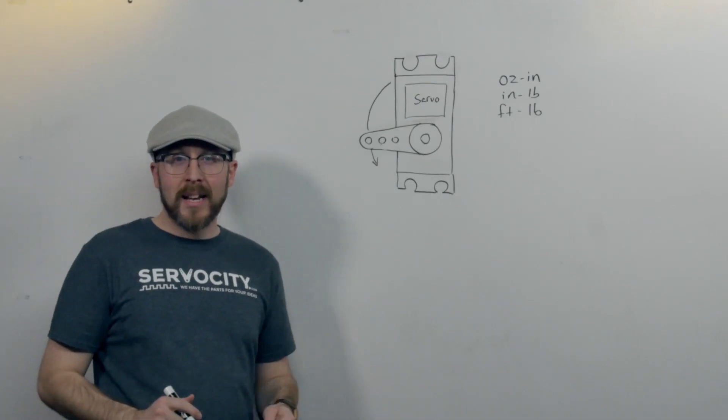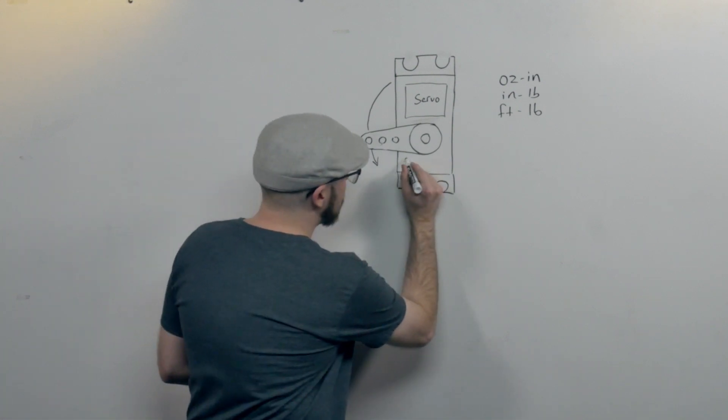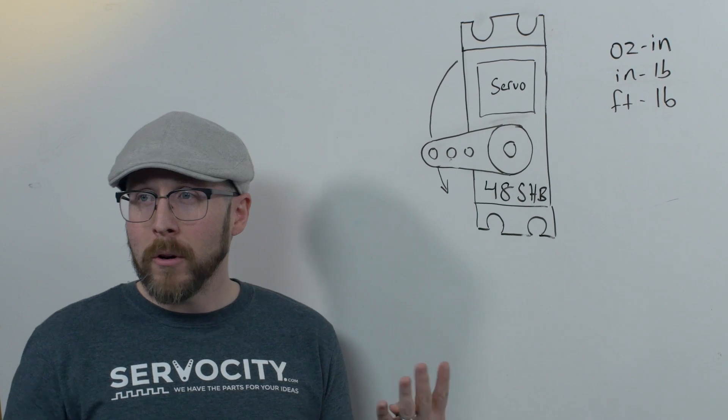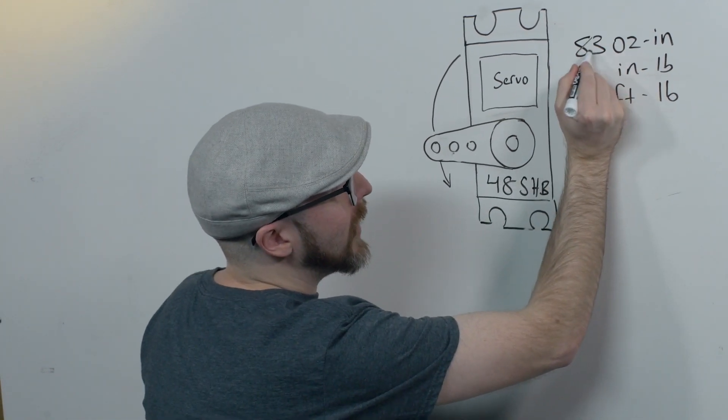Let's take a look at a more specific example. Take a 45 HP servo with a torque rating of 83 ounce-inches.